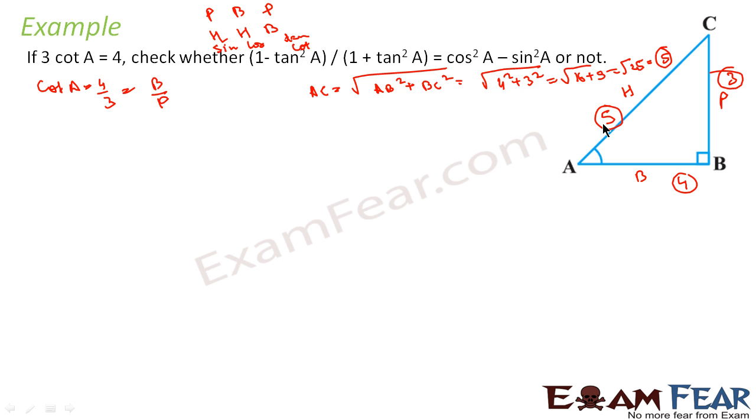With all three sides known, I can find any value. First is tan A. Tan A is P by B, which is 3 by 4.